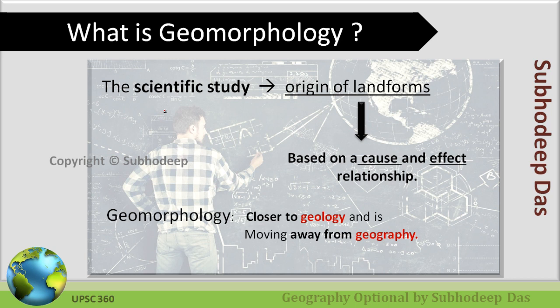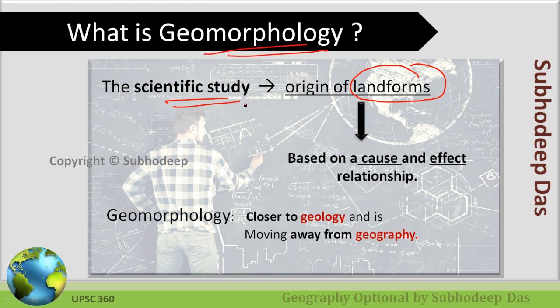Geomorphology is nothing but a scientific study of various landforms that exist throughout the world. By landform, I mean features which we actually observe, like plains, plateaus, and mountains. These are the basic landforms. We do a scientific study of how these landforms originated, and that scientific study is based on the cause and effect relationship.